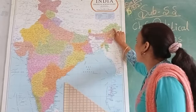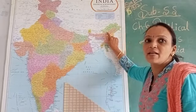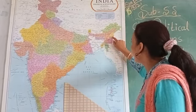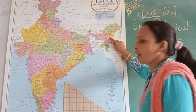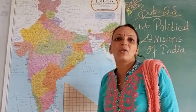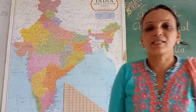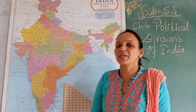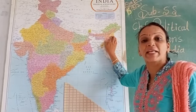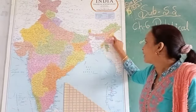Arunachal Pradesh is the first sister state, and its capital is Itanagar. The next state is Nagaland. Its capital is Kohima. The main languages spoken here are Sema and Lotha. The official language of Nagaland is English — all official forms are in English.